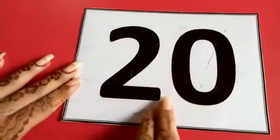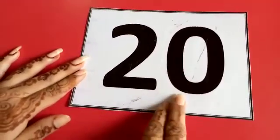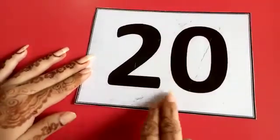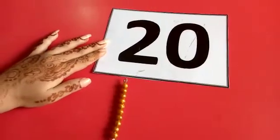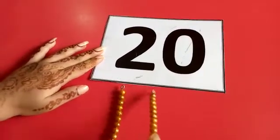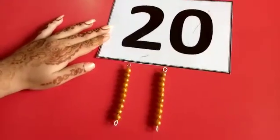This is the card number of twenty. Card number of twenty. Two, zero, twenty. One ten. Two tens. Ten, twenty.